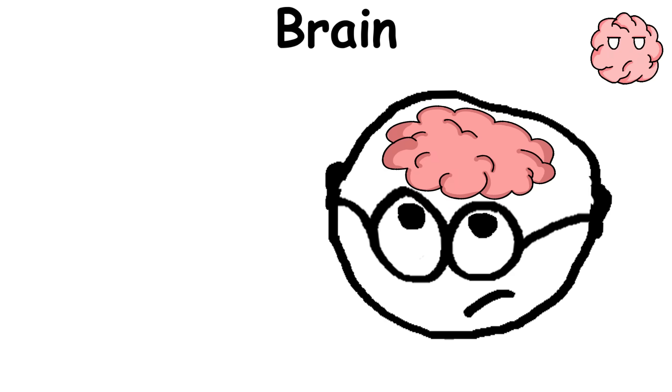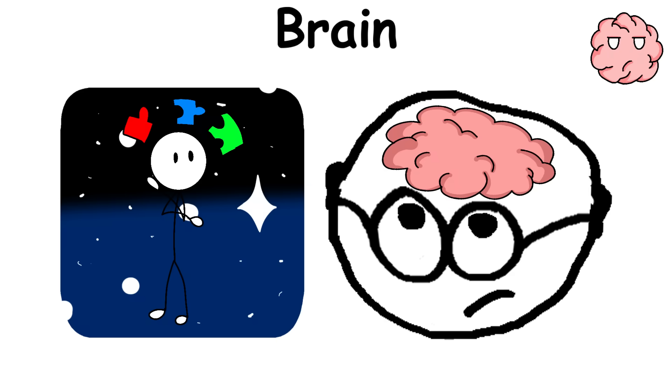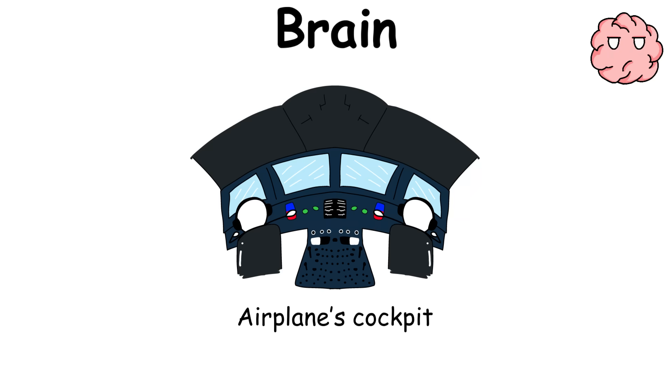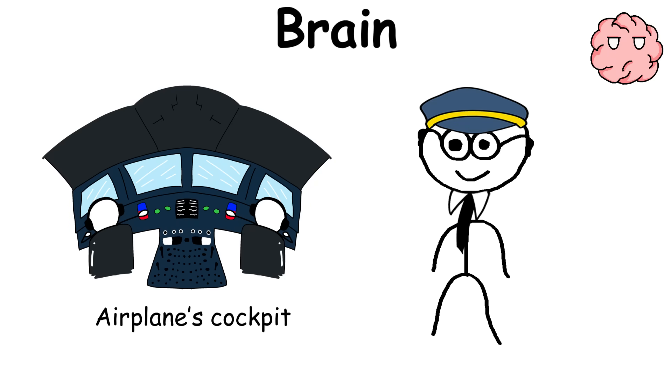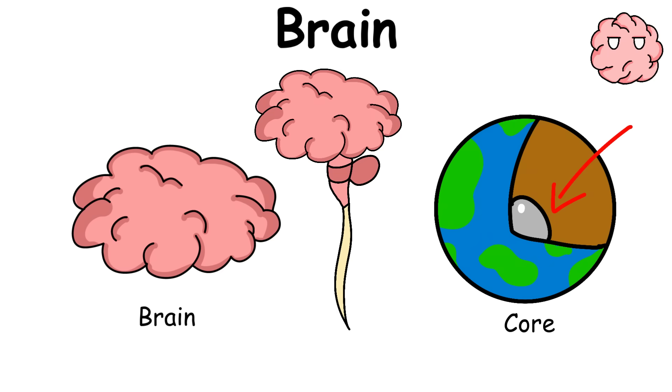The brain is often considered the most complex thing in the universe. Think of it as the airplane's cockpit where the pilots work to control the body. In the same way, the brain is the core of the entire central nervous system.